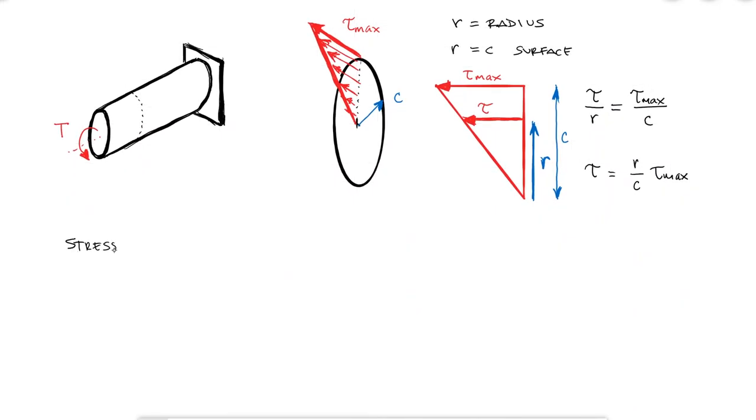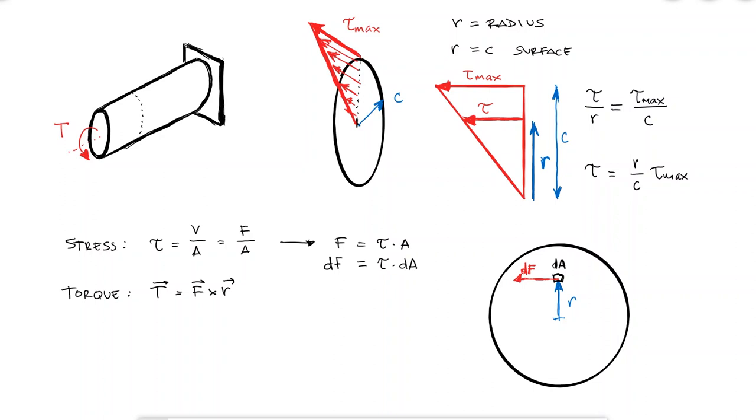If the shearing stress is defined as the shear force over area, then the force can be written as the shearing stress times the area. Remember that the torque is defined as the cross product between the force and the radius. If I look at any cross-section area within that rod, the shearing stress at a distance R affecting an infinitesimal area dA multiplied by that area dA would result in the force that that dA is subjected to. Therefore, the total torque would be equal to the integral of R dF which is the same as the area integral of R tau dA.